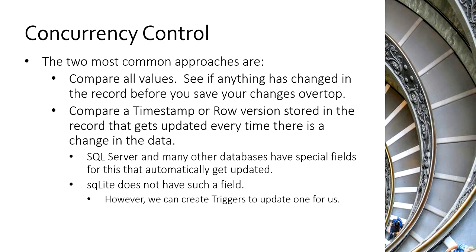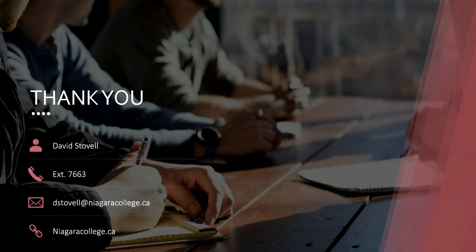SQLite, the database we happen to be using, has a way to store the same kind of byte array we'd use for a SQL Server timestamp, but it does not update it automatically. There's no built-in mechanism in SQLite for automatically updating a concurrency field. That's not really a problem though — we can do a little bit of work and create triggers to do that update for us. So triggers come to the rescue to get around the limitation of SQLite. We'll get into the demo now and build both basic auditing and concurrency control.